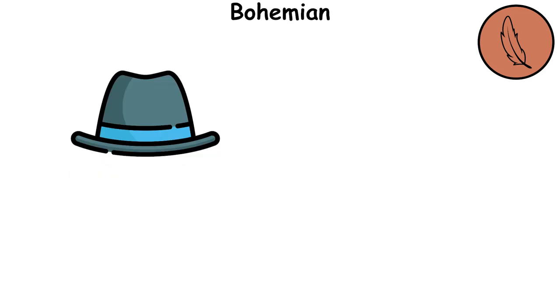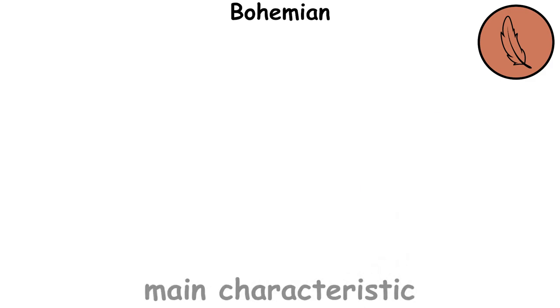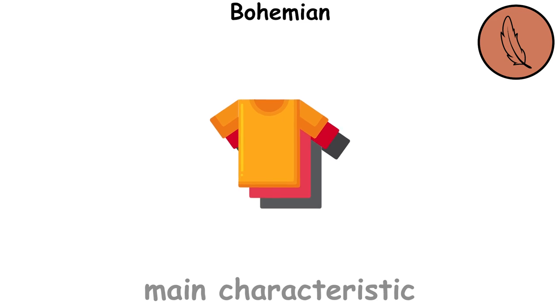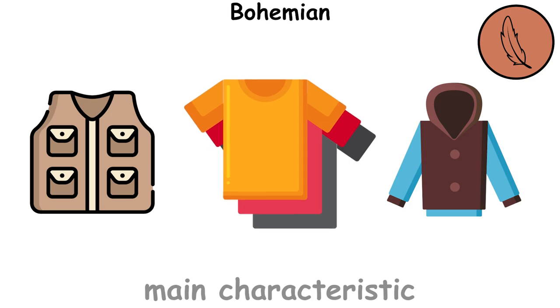Accessories are key to the boho look, with items like hats, beads, or bracelets adding texture to the outfit. One of the main characteristics of boho style for men is layering. This means combining different pieces, such as vests over shirts or hoodies under jackets, to create depth within an outfit.